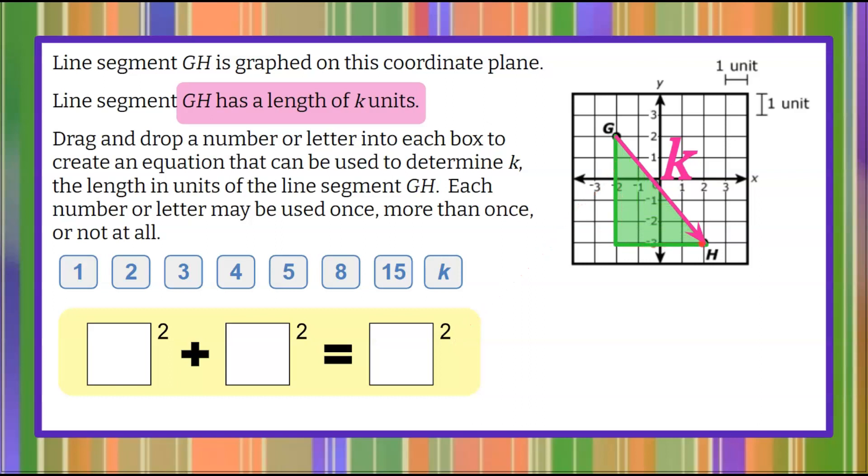I'm going to draw in a right triangle using our coordinate grid. This is my right angle here, and anytime I have a right triangle I can use the Pythagorean theorem, which is a squared plus b squared equals c squared, which you can see models what we have here.